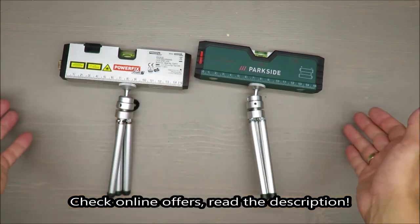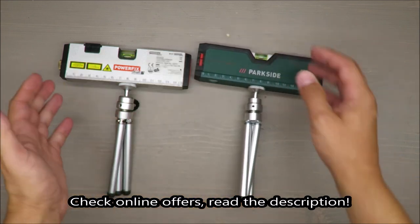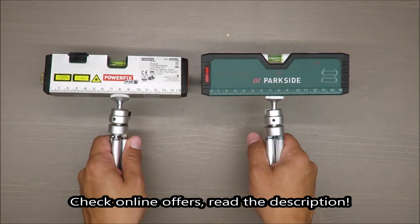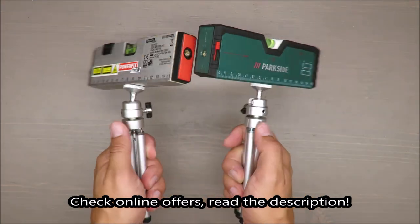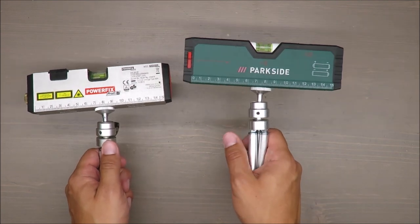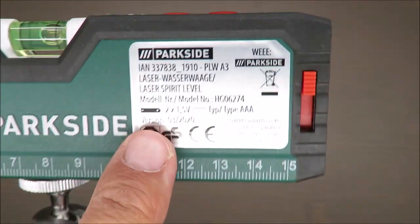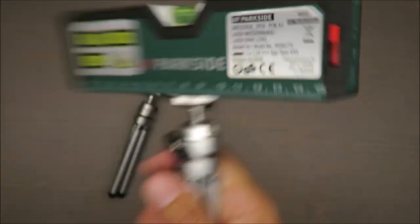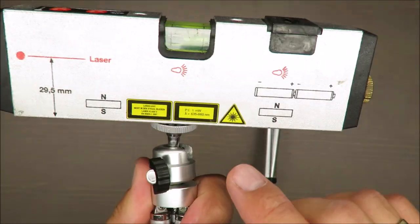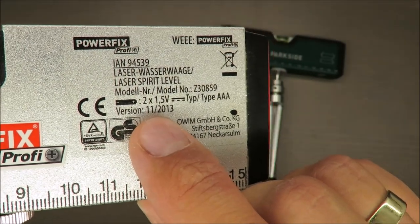Hello everybody, this is Out of the Box Unboxing. In today's episode, I'm going to perform a side-by-side comparison of two almost identical products. Both are from Lidl, but this is a Parkside 2020 version, and this one is a Power Fix Plus from way back 2013.